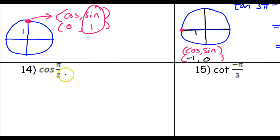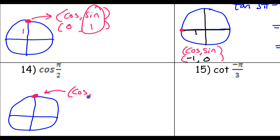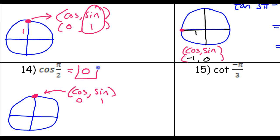Number 14: cosine of pi over two. A quick glance at a unit circle will handle this. Here's pi — pi over two will be halfway, so pi over two is right here at the top. We know that any point on the unit circle has coordinates cosine comma sine. The coordinates of this point are zero comma one, because it's over nothing and up one. So the cosine of this point is zero — that's the answer, simply zero.